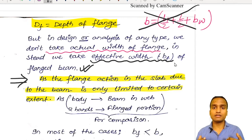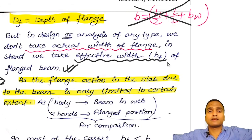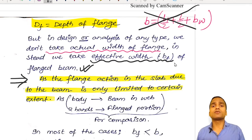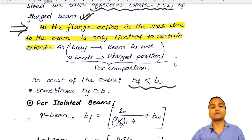For example, think of the beam as a body — the body will get contribution of strength from the flanges, like hands extending outward. The strength coming from these hands, which are the flanged portions, is limited. We cannot extend them so far that there is almost nil contribution to strength. That is why, due to limited flange action, we take only the effective width of flange, not the actual width. In most cases the effective width is less than the actual width, though sometimes they can be equal.